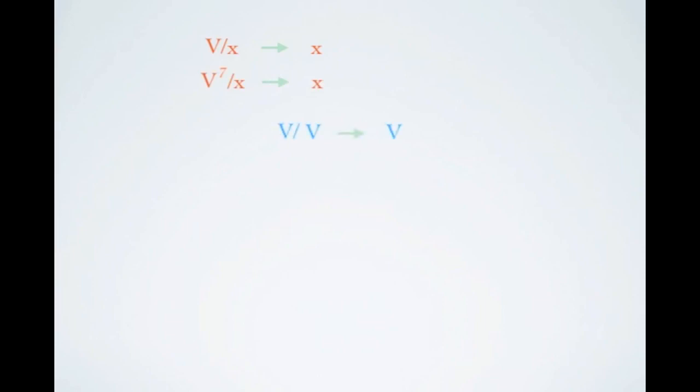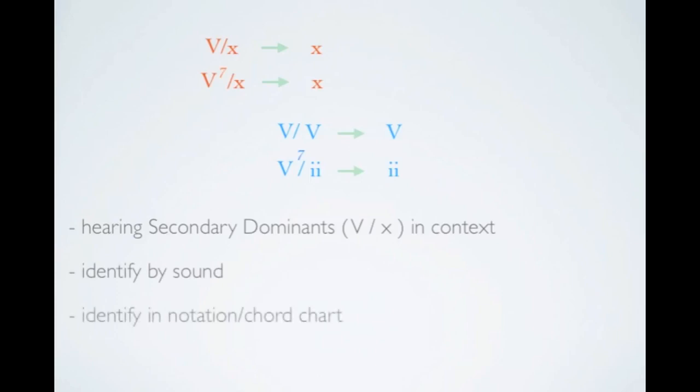For example, V would resolve to 5, or V7 would resolve to 2. In this video, we'll sharpen our ear by listening to secondary dominance in context by looking at some popular examples. This will help us begin to identify them by ear and locate them in notation, such as a chord chart.